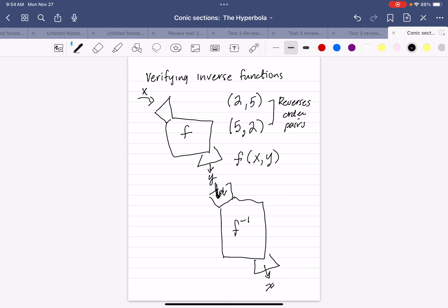then there's a point (y, x) on f inverse. So it reverses the ordered pairs.